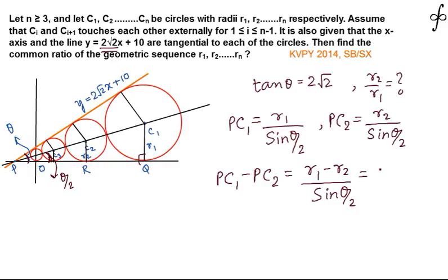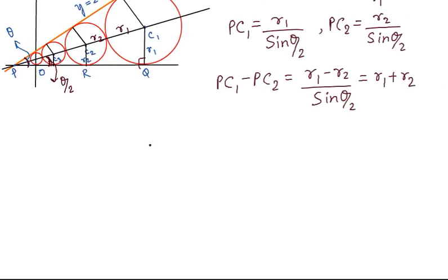PC1 − PC2 is nothing but the distance C1C2, and since the circles touch externally, C1C2 = r1 + r2. So we get the relation: (r1 − r2) / (r1 + r2) = sin(θ/2).